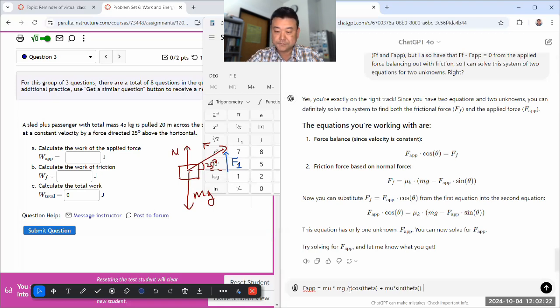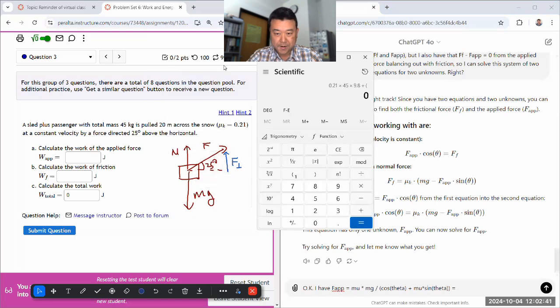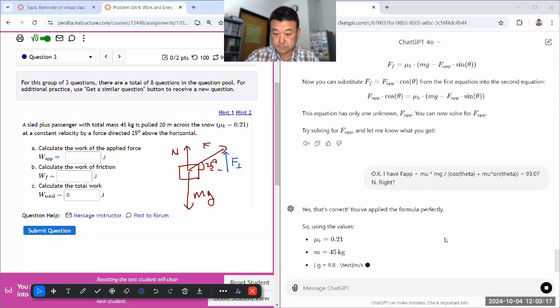Let me do it that way: 0.21 times 45 times 9.8 divided by parenthesis cosine 25 plus 0.21 times sine 25 close parenthesis equals 93.07. So the work will be that times 20. Can I do that in my head? One eight six zero. That's probably close enough.